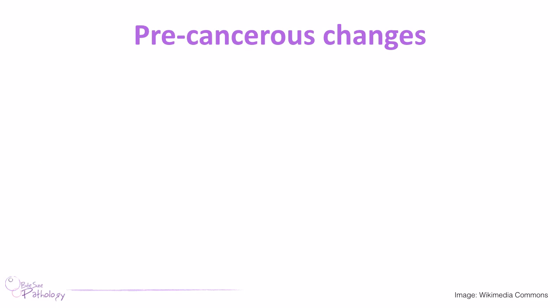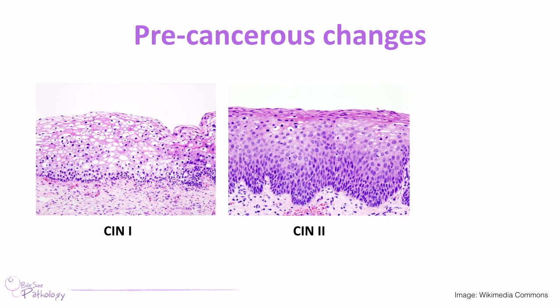What do we mean by these precancerous changes? These are the hallmark signs of changes occurring within the cells that could potentially lead to cancer. In the cervix we call this cervical intraepithelial neoplasia — new, abnormal cells developing within the cervical epithelium. Unlike true cancer, these have not breached the basement membrane; we're looking at changes that occur within the epithelium before that line is crossed. We grade this as CIN1, CIN2, and CIN3.